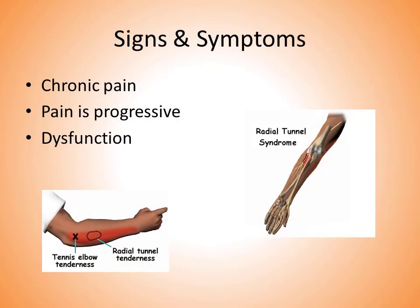There is very little to see in this entrapment because it is a deep structure. The patient may complain of chronic aching with lateral pain approximately 6 to 7 centimeters below the lateral epicondyle. The pain is progressive, often related to muscle effort, and is also oftentimes nocturnal.